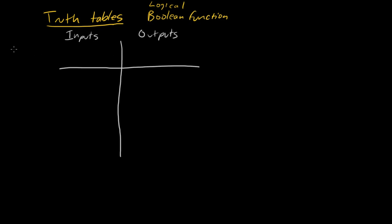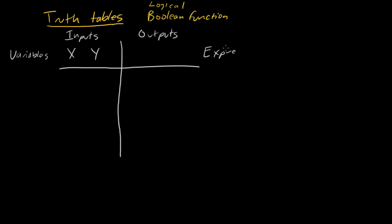In the first row, our inputs are always going to be expressed as variables — things like x and y. Our outputs are going to be expressed in terms of a Boolean expression.